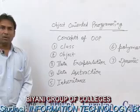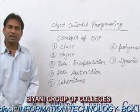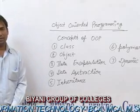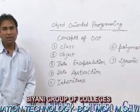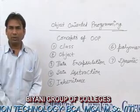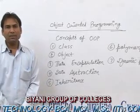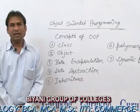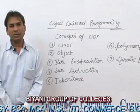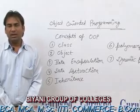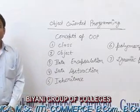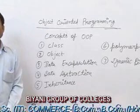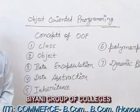The members of a class can be accessed by three types: public, private, and protected. If the members of the class are public, then they can be accessed outside the class. If the member of the class is private, they cannot be accessed outside the class.